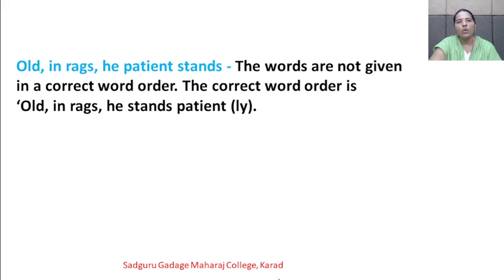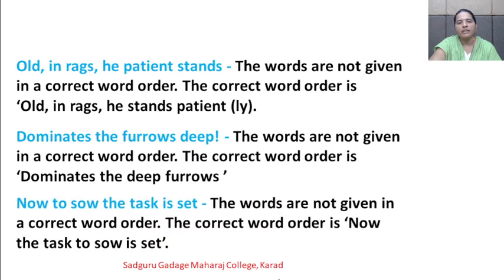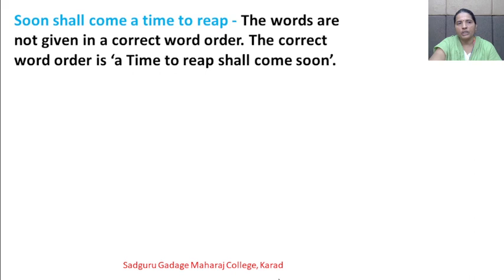Next example of inversion: 'Old in rags, he patient stands' — the correct word order is 'old in rags, he stands patiently'. Next: 'Dominates the furrows deep' — correct order is 'dominates the deep furrows'. Next: 'Now to sow the task is set' — correct order is 'now the task to sow is set'. Next: 'Soon shall come a time to reap' — correct order is 'a time to reap shall come soon'.